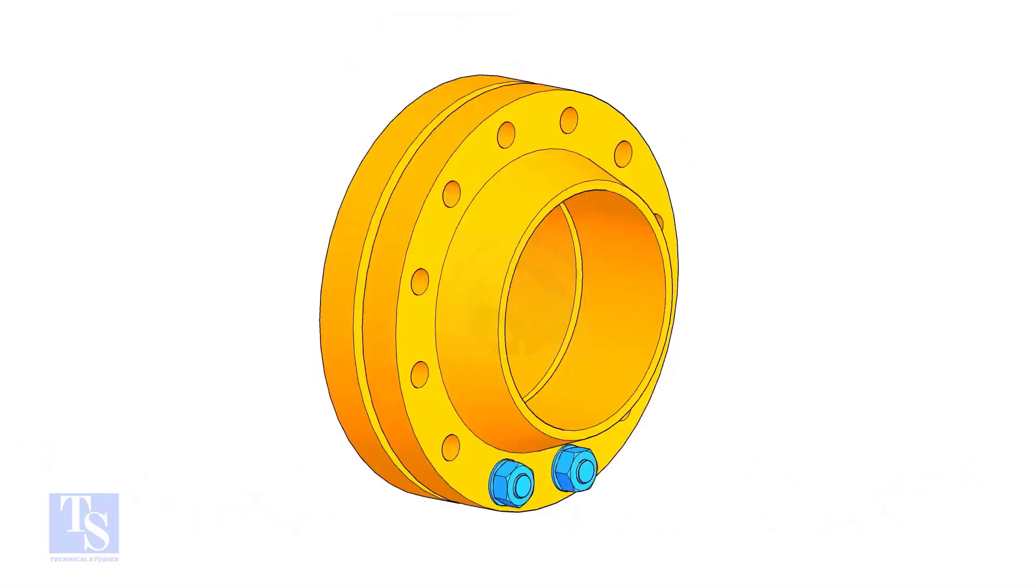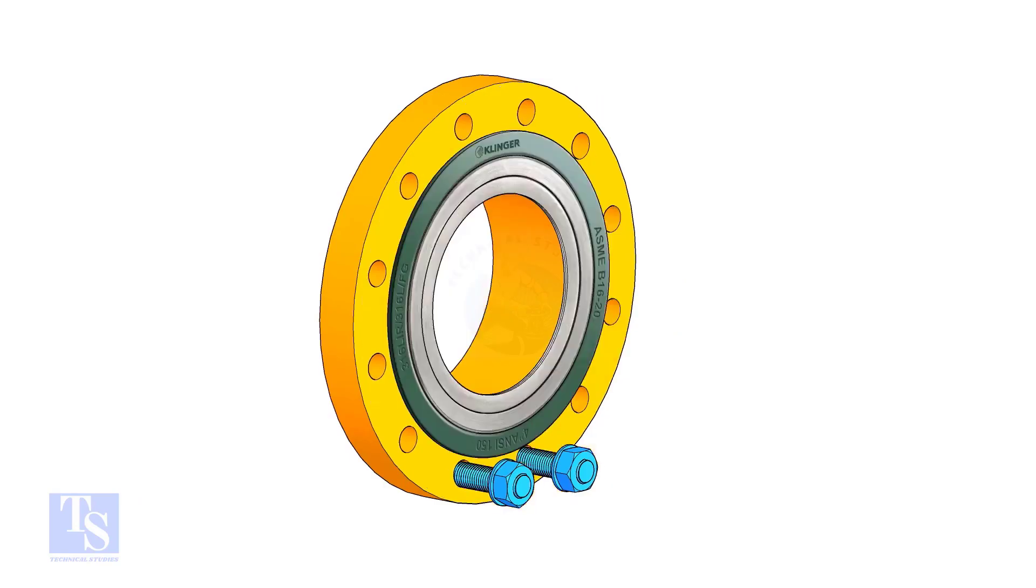Put two bolts in the adjacent bottom side holes. Put the gasket between the flanges.